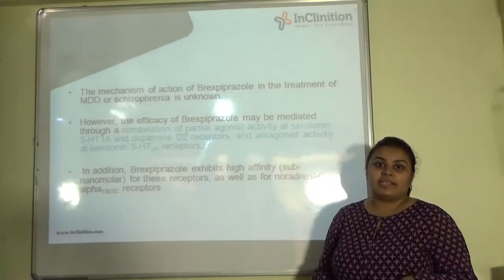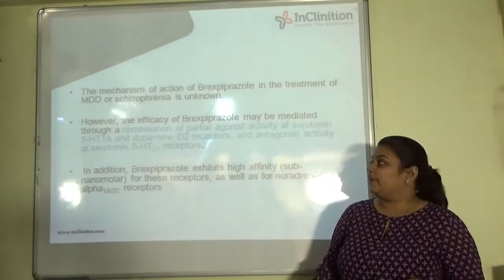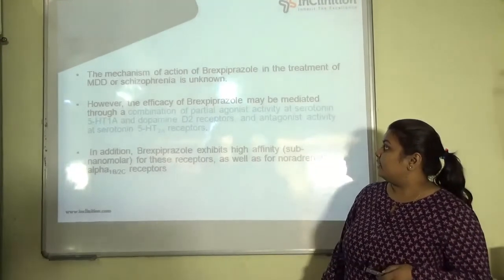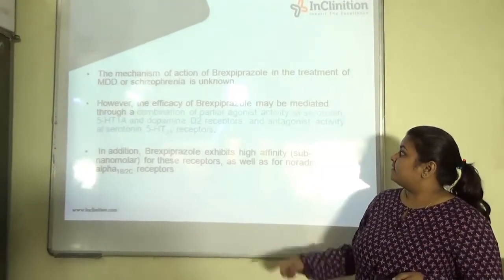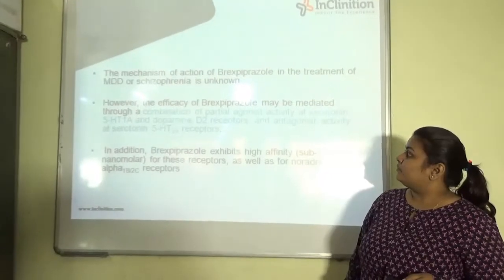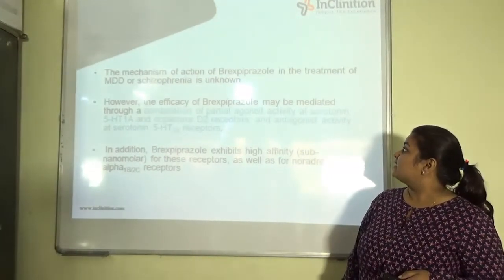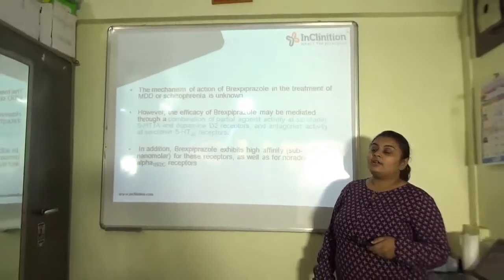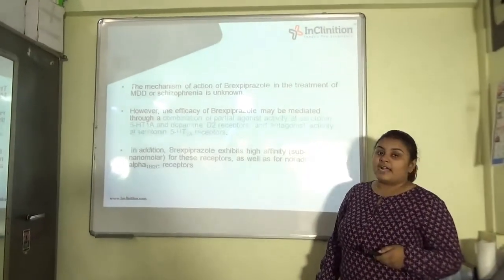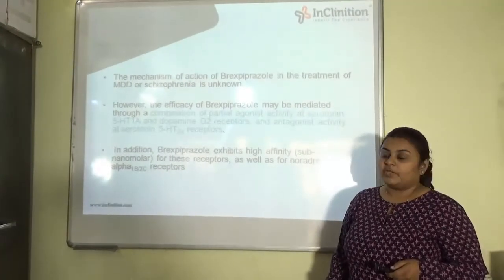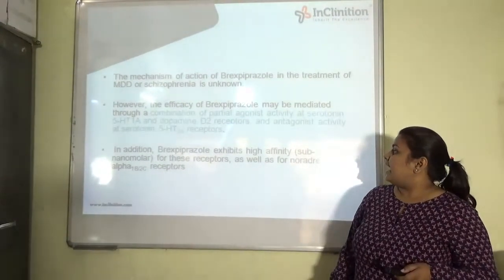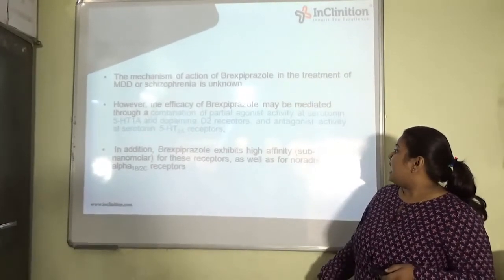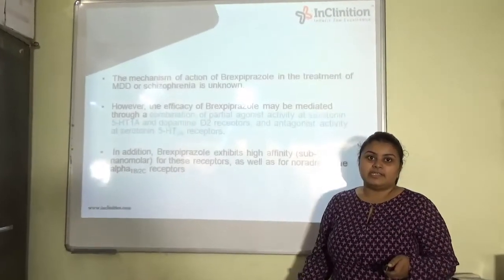The mechanism of action is basically not fully known, but it is said that it affects receptors like serotonin and dopamine receptors. The efficacy of Brexpiprazole may be mediated through a combination of partial agonist activity at serotonin receptors and dopamine receptors, and antagonist activity at 5HT2A receptors. Brexpiprazole exhibits high affinity for these receptors at nanomolar concentrations, as well as for noradrenergic receptors in some cases.